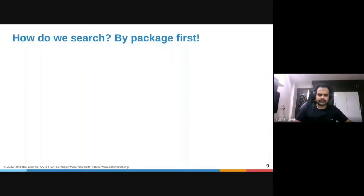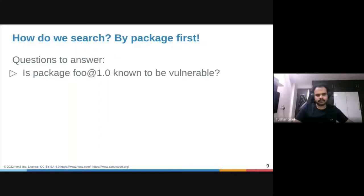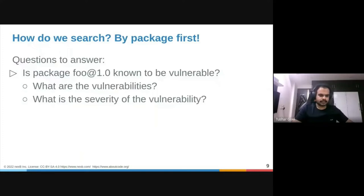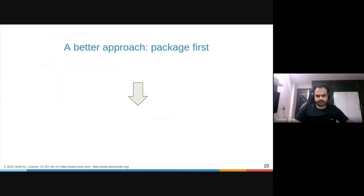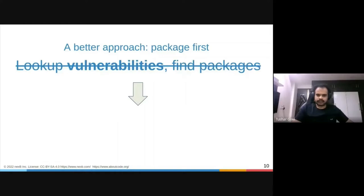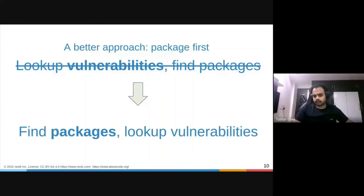How do we search? We are package-first. We have a package Foo at version 1 and we want to know what vulnerabilities are associated with that package — what are the severities and which version has a fix. It is a very rare case that you have a vulnerability and want to check which packages are associated with it. A better approach is package-first: find the packages and then look up vulnerabilities.